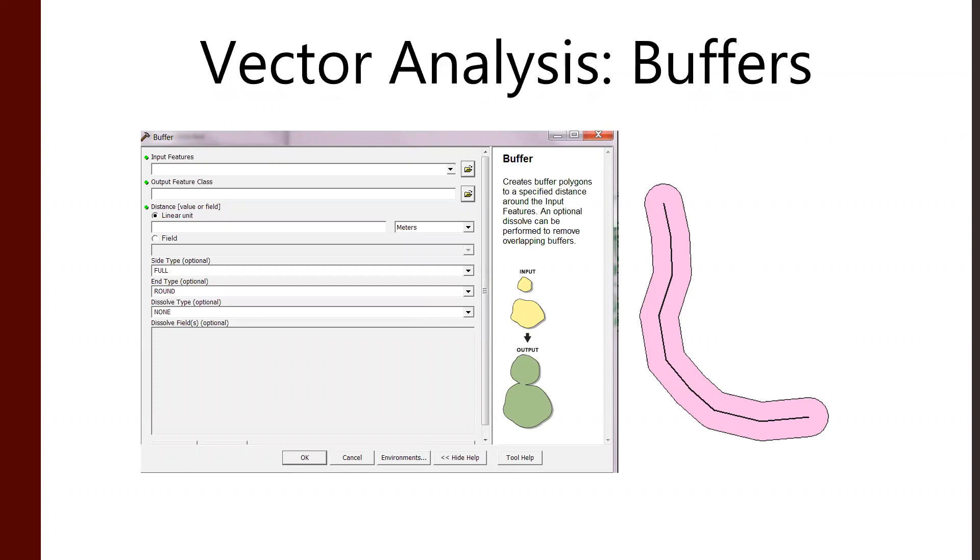So, for example, a buffer. In our class, we do buffers in lab four. Take a vector data - a line, a point, a polygon. You can buffer whatever you want. Any vector data. And say, okay, give me a distance around this input feature. That's even what the tool says.